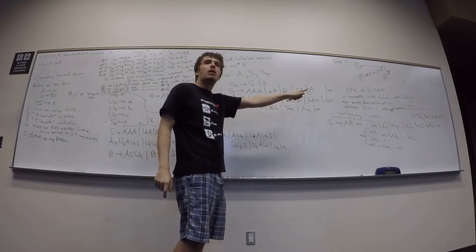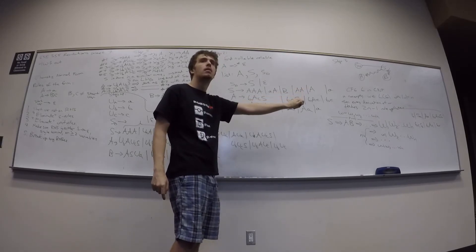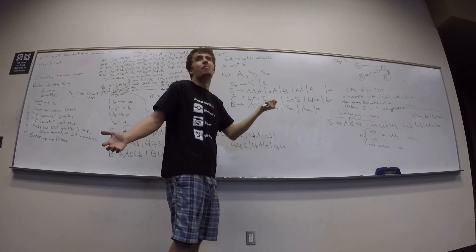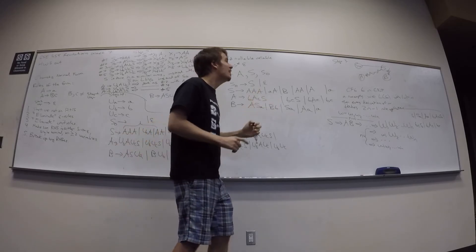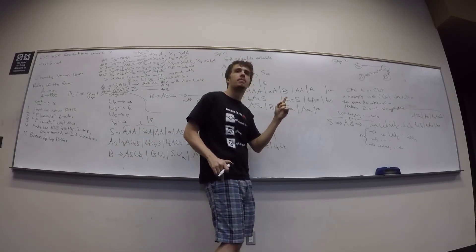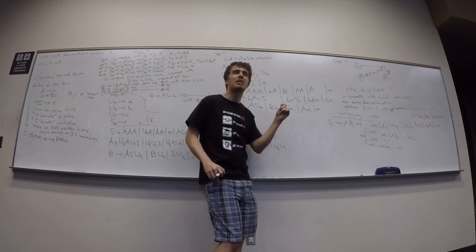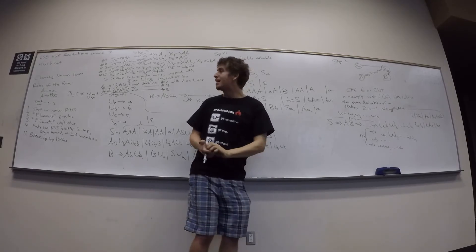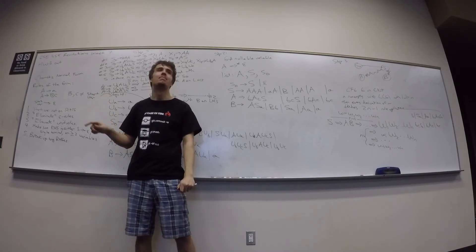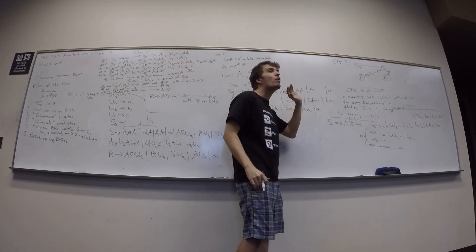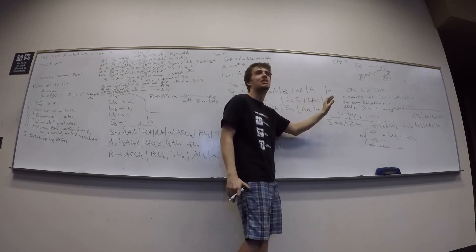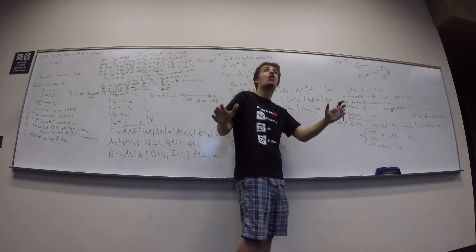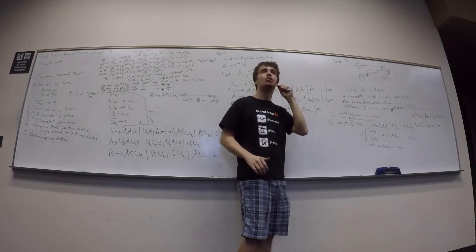What about the empty string? For n=0, 2n-1 = -1, which doesn't make sense. There's only one way to make the empty string in CNF — exactly one rule application, S to epsilon. So no matter what string you have, you know exactly how many rule applications it takes, which tells you the height and width of the parse tree.